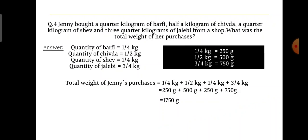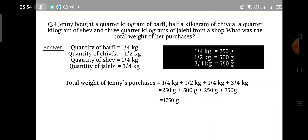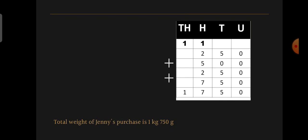One quarter kg means 250 grams, half kg means 500 grams, and three-quarter kg means 750 grams. Total weight: 250 g + 500 g + 250 g + 750 g. Adding these together we get 1750 grams. So the total weight of Jenny's purchase is 1 kg and 750 grams.